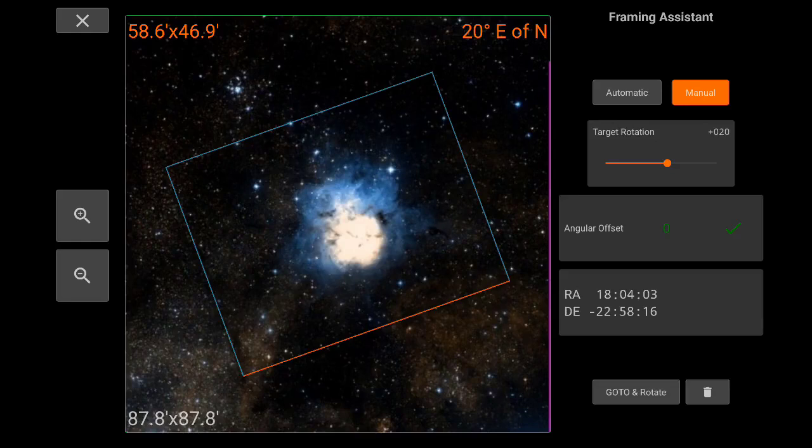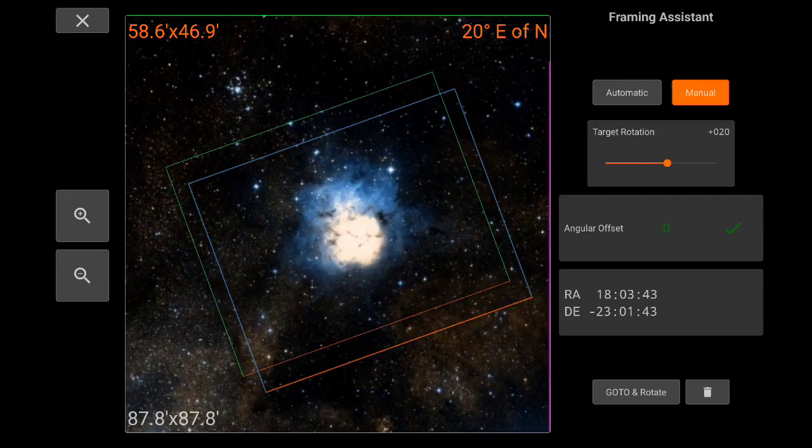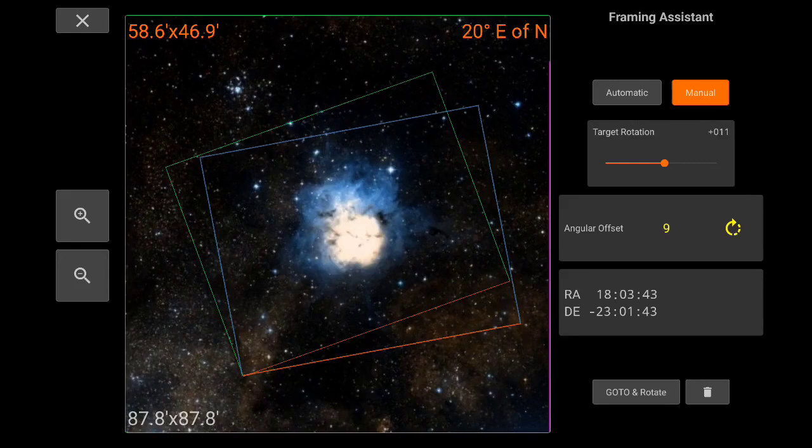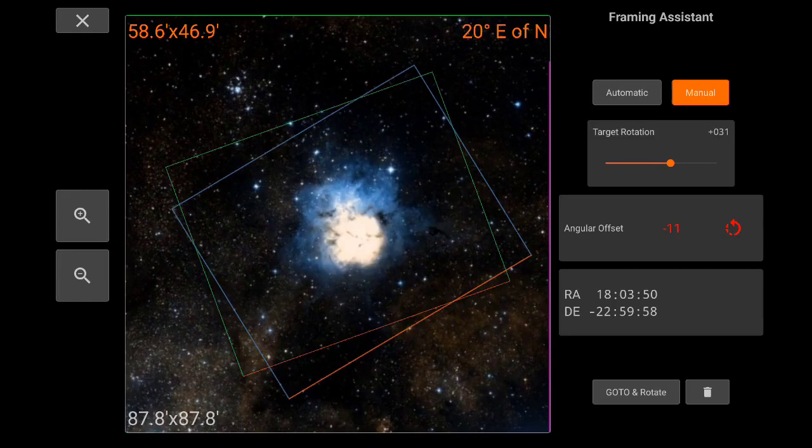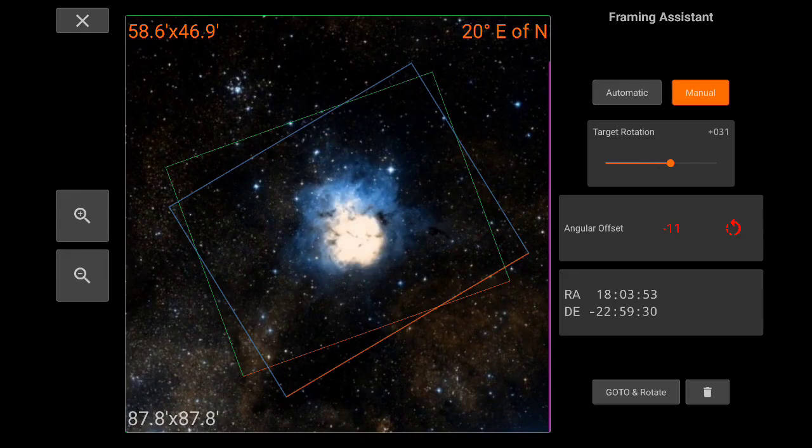And the blue indicator or the blue FOV is the one you can control by simply dragging it around or by using rotation controls, rotation gestures. You can also adjust it using the slider here for more finer control.